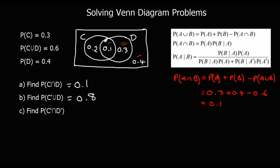For P(not C and not D): not C covers those two sections; D covers two sections, so not D covers the other two. It's an AND, so we want the section with both conditions — the bit outside both circles — which is 0.4.